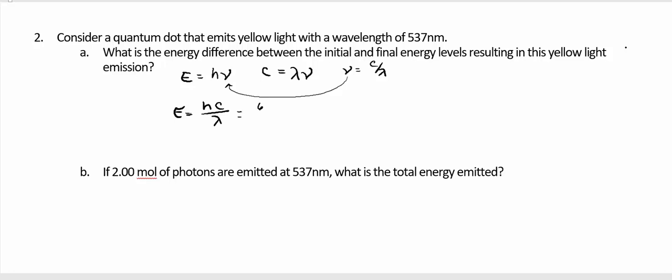Now I'm going to plug in my constants. There's H. There's C. Divided by my wavelength. Now I need that wavelength in meters, and how I do that is I multiply my nanometers by 10 to the negative 9 meters. And when I do that arithmetic, I get 3.70 times 10 to the negative 19 joules.